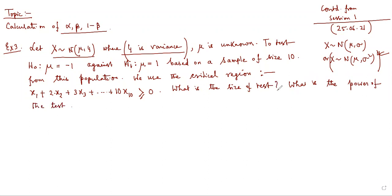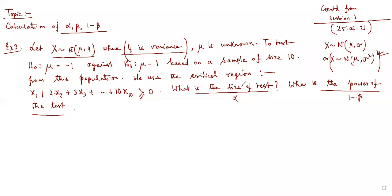Whenever they ask for the size of the test, they mean alpha. Whenever they ask for the power of the test, they mean one minus beta. You can directly calculate one minus beta, or calculate beta first and subtract from 1. I always recommend calculating beta first so you also know the probability of committing Type II error.